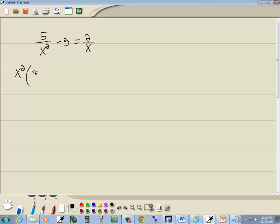And we're going to multiply it times this fraction, so multiply it times 5 over x squared. We'll multiply it times the negative 3, and we'll multiply it times the fraction on the right side, the 2 over x. Well, these x squareds cancel here. Here we've got x and x squared. That cancels, and leaves me 1x. So I'm left with 5 minus 3x squared is equal to 2x.